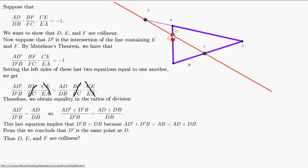Since D and D' are the same point, and we assumed D' was on the line with E and F, this means D, E, and F are collinear. This is exactly what we wanted to prove.